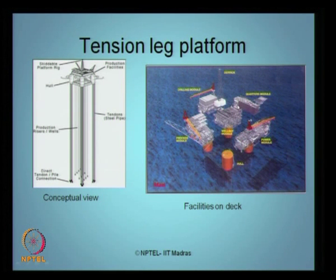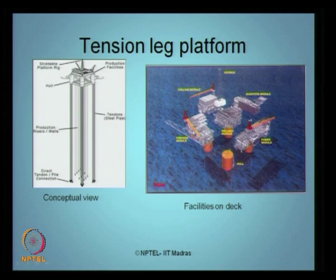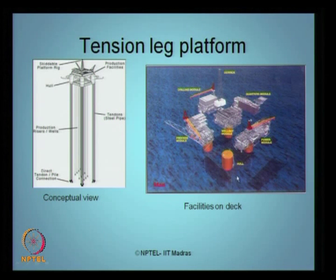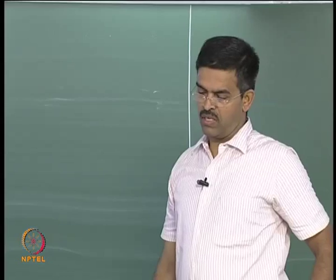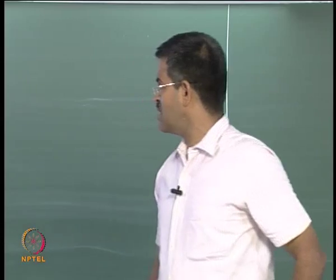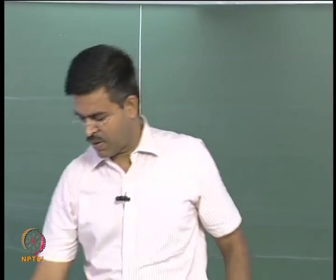This is the quarters module where people working on topside generally live. This is the drilling module, where the derrick is housed. There are different kinds of cranes and flare booms, what we call the process module. You can see the tethers anchoring down the TLP's legs — generally not single but in groups. What you see here are all production risers. Basically, this figure shows the facilities available on the deck of a TLP, which are nevertheless smaller than those available in a conventional gravity-type platform.